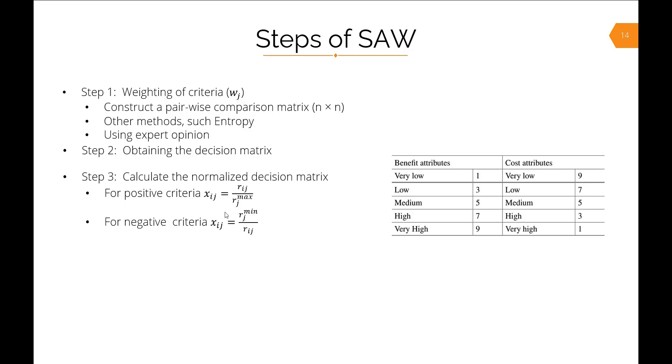For negative criteria, we use the formula xij equals rj min divided by rij. Then we have the weighting criteria and the normalized decision matrix, so we multiply the normalized weight of each criterion with respect to criteria weightage—we multiply the weight obtained from step one and the normalization matrix together.